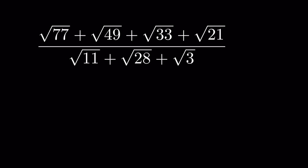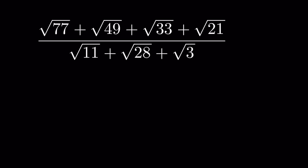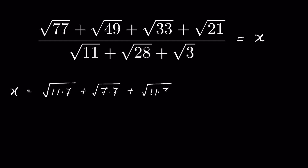We have √77 + √49 + √33 + √21 upon √11 + √28 + √3. We have to simplify it. Let this expression equal x. So x equals √77, which we can write as √(11×7), plus √49 as √(7×7), plus √33 as √(11×3), plus √21 as √(7×3), all upon the denominator.